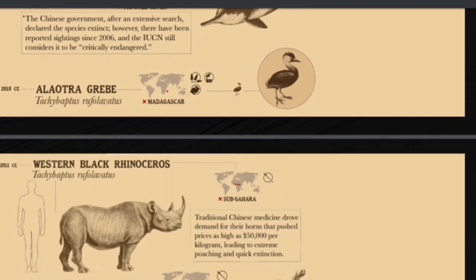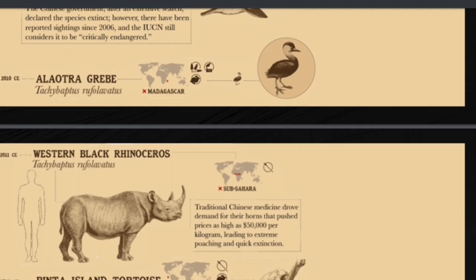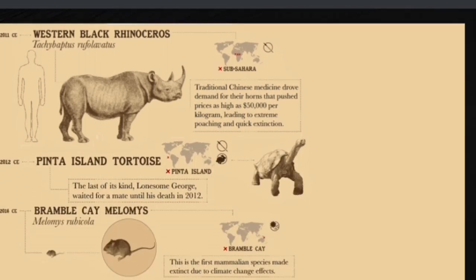In 2010, the Alaotra grebe went extinct in Madagascar due to destruction of its habitat, invasive species, and pollution. The western black rhinoceros went extinct in 2011 — its enormous horns were in high demand, pushing prices as high as $50,000 per kilogram, leading to extreme poaching and rapid extinction. In 2012, Lonesome George, the last Pinta Island tortoise from the Galapagos Islands, died waiting for a female mate. The most recent is from 2016: the Bramble Cay melomys, a species of mouse, went extinct and was the first mammalian species to be made extinct due to the effects of climate change.